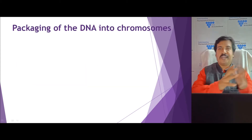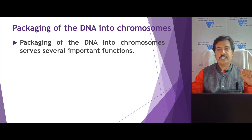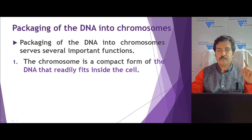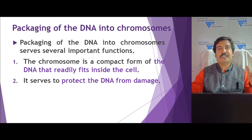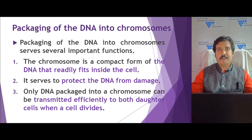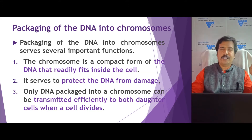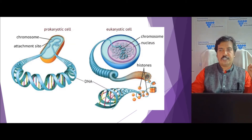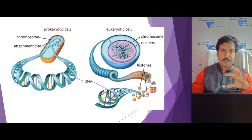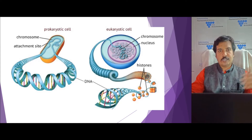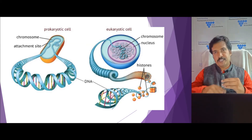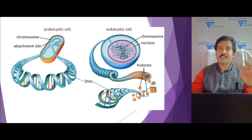Why is there a need to package chromosomes? There are several reasons. First, the chromosome makes DNA into a compact form so that it can readily fit into a cell. Second, this packaging protects the DNA from getting damaged. Third, it is easy for DNA to replicate and divide as a chromosome, and it can be divided while the cell divides — making it easy to migrate to daughter cells during cell division. As shown in the pictorial representation, the prokaryotic chromosome is present in the cytoplasm associated with certain proteins, whereas in eukaryotes the DNA is wrapped with protein, packed and condensed to form a chromosome located inside the nucleus.